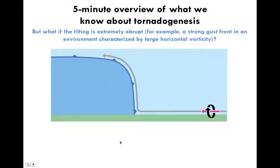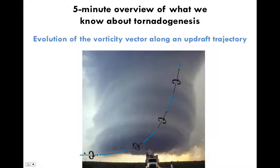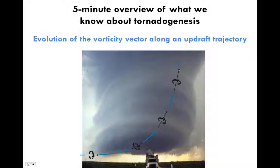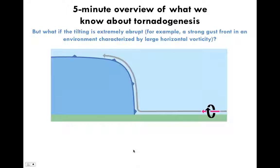One issue with making a tornado is that this process by itself can give us the rotational loss, but it can't actually lead to a tornado at the surface. Air parcels gliding upward into the updraft only develop vertical vorticity as they rise away from the ground. Right at the ground, the vorticity vector is always going to be horizontal. A tornado is extreme vertically oriented vorticity that extends all the way to the surface, so tilting of vorticity by an updraft alone can't actually make a tornado.